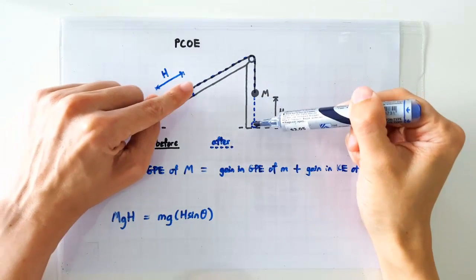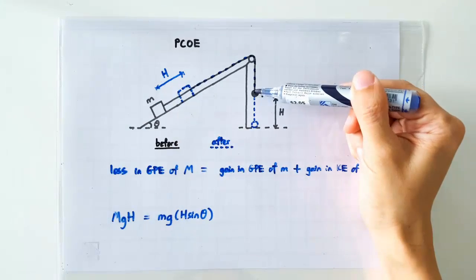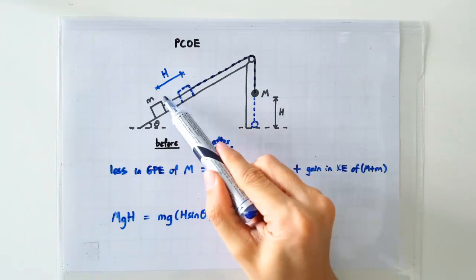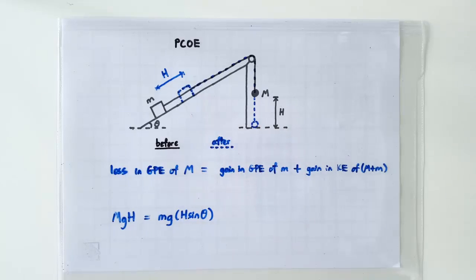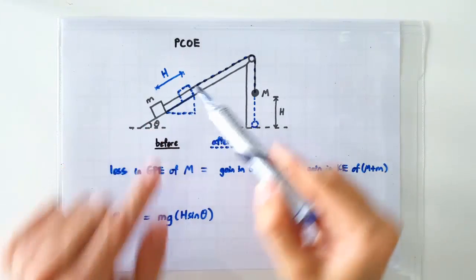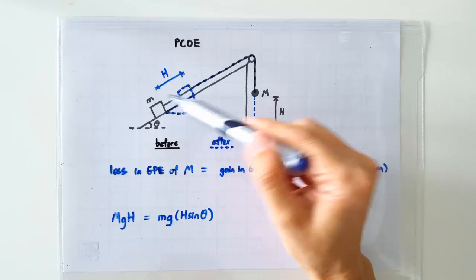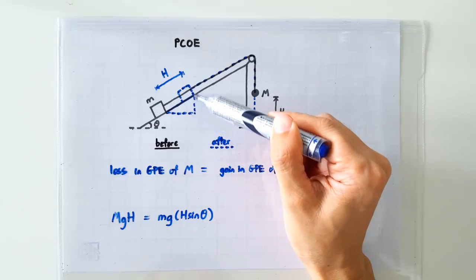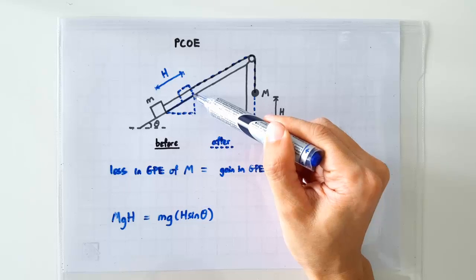See? If this end goes down by H, this end should go up along the slope by H as well. So if this is H, then the vertical height gained by the wooden block is of course this length here, which is H sine theta.